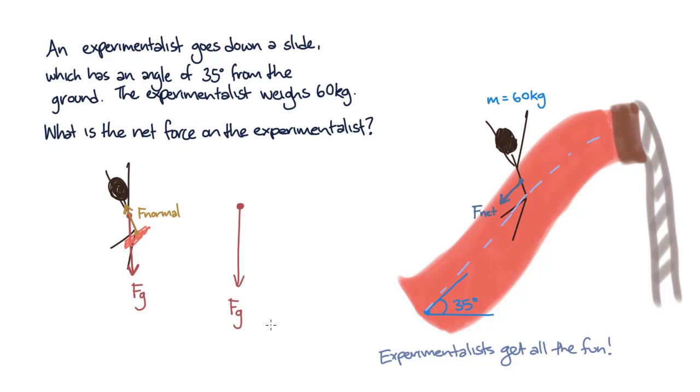So breaking vectors up essentially means that we can split vectors into two smaller vectors at right angles, which can be added together to create the original vector. The net forces on the experimentalist cannot be neatly summed in the same direction, as they're acting at different angles. So let's break up the gravitational force into a component along the ramp and a component perpendicular to the ramp.